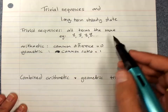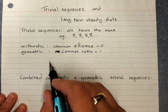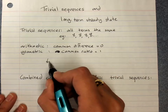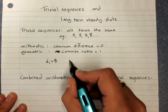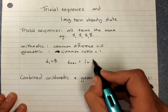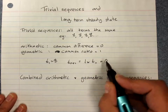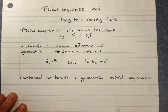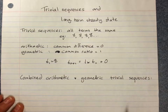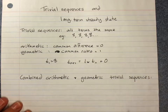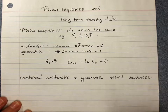Technically you can call any trivial sequence both geometric and arithmetic. T1 is 8, and Tn+1 is 1 times Tn plus 0 — common ratio of 1, common difference of 0. So technically they're both arithmetic and geometric. They don't have growth or decay; they have constant values. And when I do an example you'll see why it can be actually kind of useful.